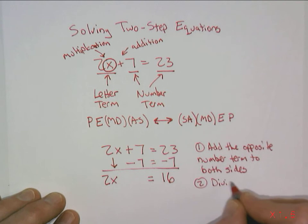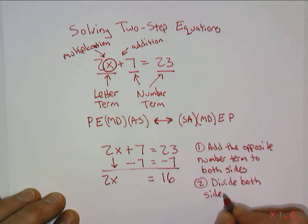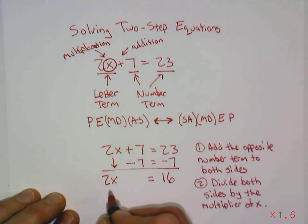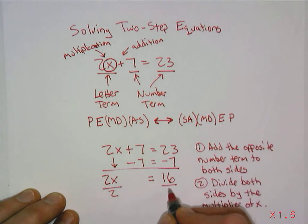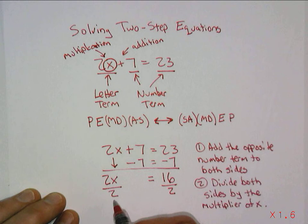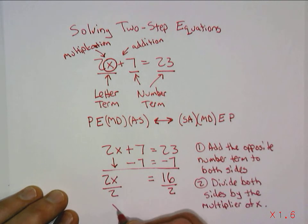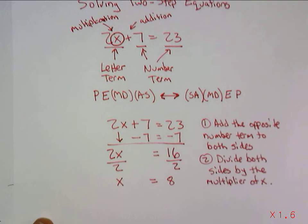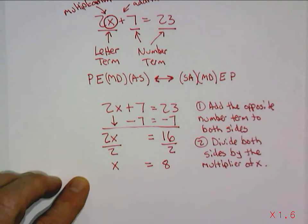So now we're going to divide both sides by the multiplier or coefficient. Sometimes it's called the multiplier of x. So whatever we're multiplying x by, in this case, we're going to divide both sides by. So 2x divided by 2 gives you 1x, or just x. And 16 divided by 2 gives you 8. And so 8 is the solution to this equation for x. x equals 8.